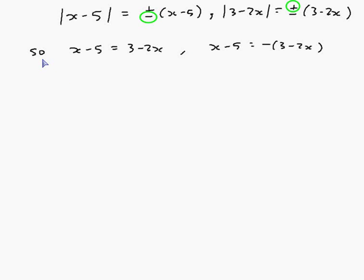So if I add 2x to both sides I'll get 3x, and if I add 5 to both sides I'll get 8. So x is equal to 8 on 3. And if I expand out this bracket minus 3 plus 2x. Okay, this time it looks most reasonable for me instead of subtracting 2x from both sides.